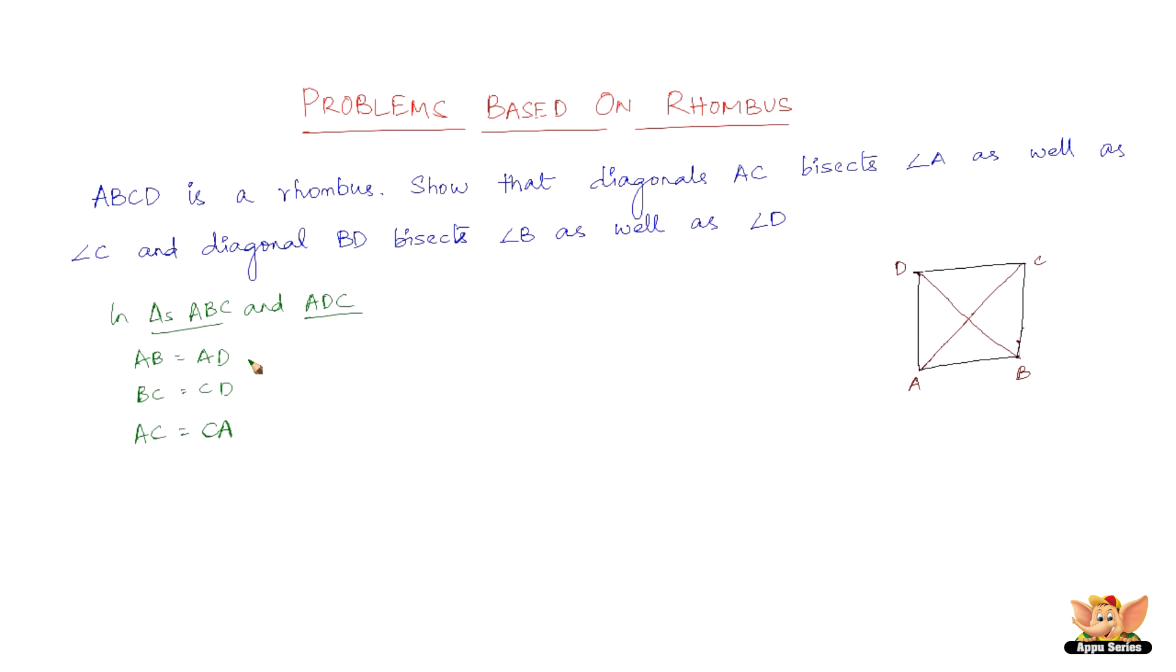So now by SSS congruence criterion, side side side congruence criterion, we have triangle ABC congruent to triangle ADC.